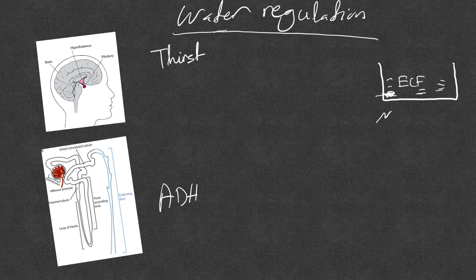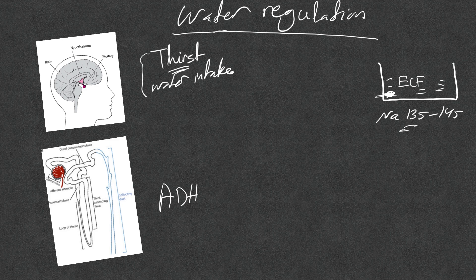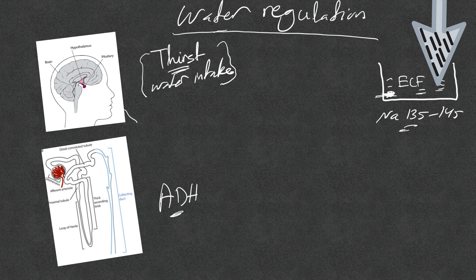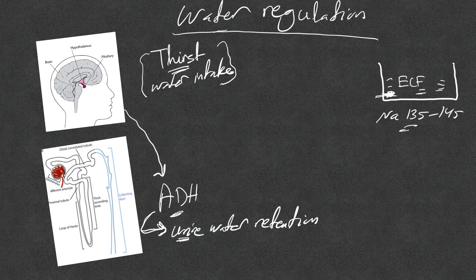To keep sodium concentration tight between 135 and 145, if the body senses any deficit in ECF water, it triggers the thirst mechanism so we start drinking water. That's why you rarely see hyponatremia in somebody who can drink water. Additionally, decreased ECF water triggers the posterior pituitary to release ADH, leading to urine water retention. Water intake and water retention together reset the deficit and keep sodium concentration within normal limits.